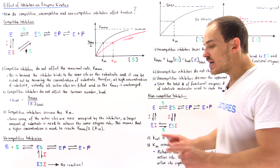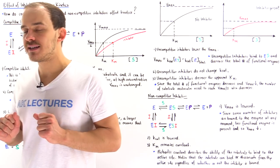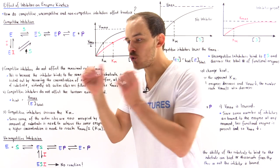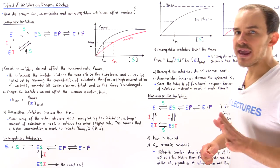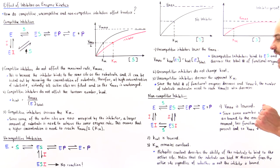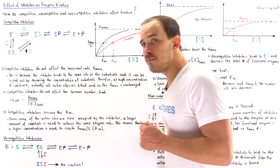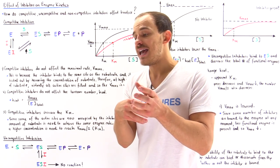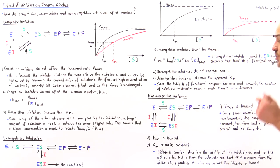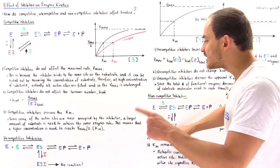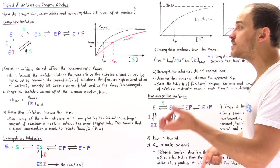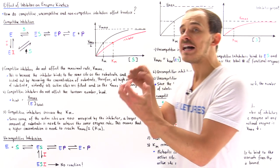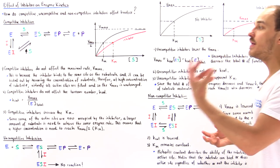Now let's move on to point two: Kcat, the turnover number, is also lowered in non-competitive inhibition. This means the efficiency of the active site in transforming substrate into product is decreased. This makes sense because when the enzyme binds the inhibitor, the inhibitor changes the shape of the active site so it is no longer complementary to the substrate. Although the substrate can still bind to the active site as likely as in the absence of inhibitor, once the substrate binds onto the enzyme-inhibitor complex that fit will not be perfect, and the active site's catalytic ability is impaired.